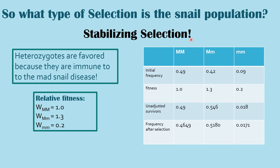In stabilizing selection, the heterozygous genotype dominates the population. Our relative fitness values are going to be 1, 1.3, and 0.2 for the different genotypes respectively. In order to find the frequency after selection, we take our fitness times our initial frequency for each value, and that gives us the unadjusted survivors.